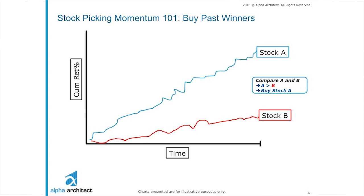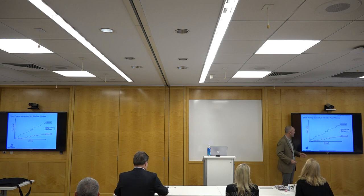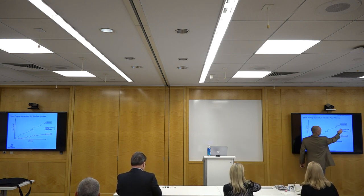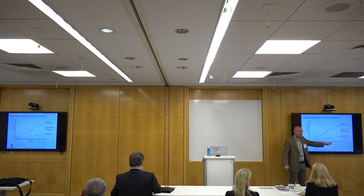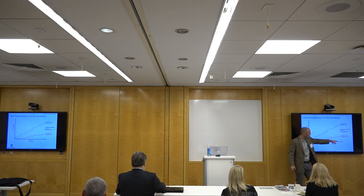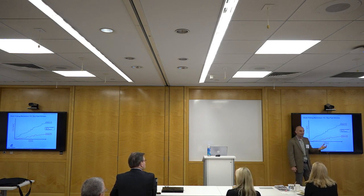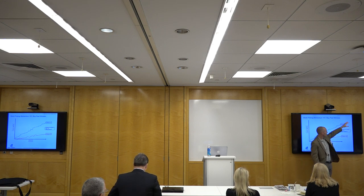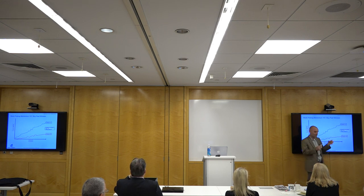On the x-axis we have time; on the y-axis, cumulative return. The general idea behind cross-sectional momentum is: let's say we have a two-stock universe, stock A and stock B. Over 12 months, we compare the cumulative returns of A to B. If one has relative strength — i.e., it's the winner — that stock is going to presumably keep on winning. This is the momentum stock; this would be the non-momentum stock.